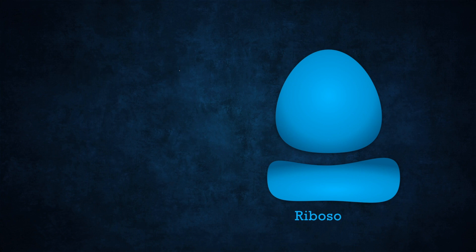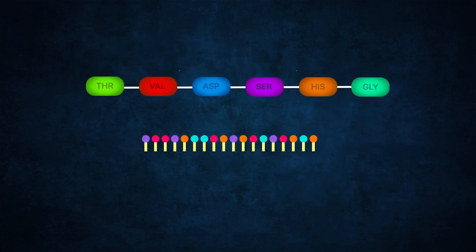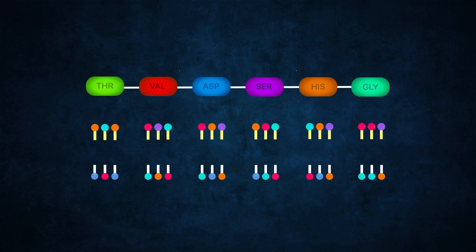RNA then travels to specialized proteins in the cell called ribosomes. The ribosomes then use the genetic code in the RNA to produce proteins by assembling amino acids, which are the building blocks of proteins. The order of your amino acids depends on the order of bases in your genetic code.